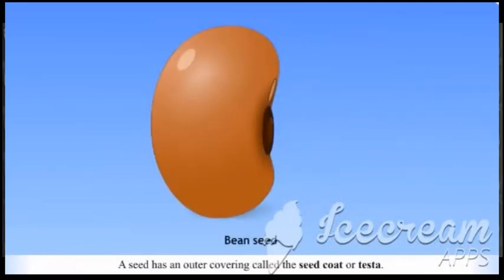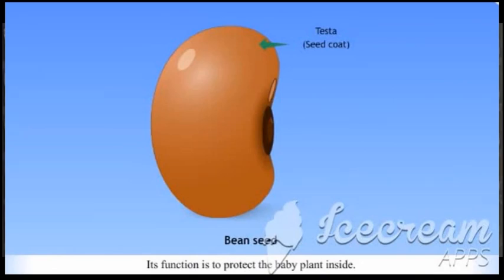A seed has an outer covering called the seed coat or testa. Its function is to protect the baby plant inside. There is a tiny hole in the seed called the micropyle through which the seed absorbs water.